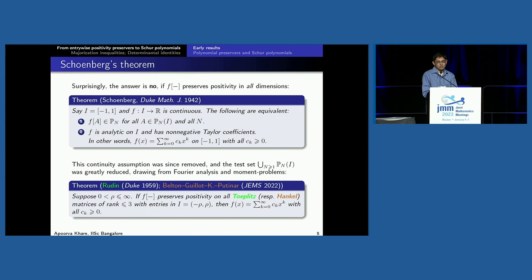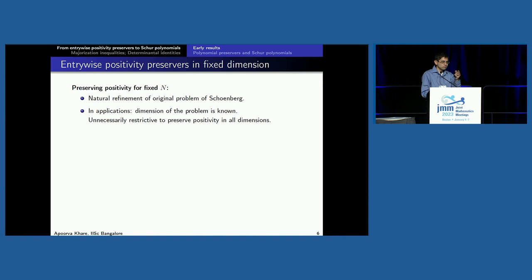This is a very clean ending to the question of Pólya and Szegő: what are all the positivity preservers in all dimensions? The natural next question is what about a fixed dimension? That's not just a theoretical refinement — it's also important in applications where you want to regularize high-dimensional covariance matrices, like sample covariance matrices, and get sparser, cleaner covariances.